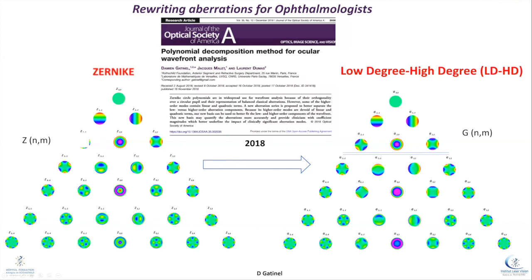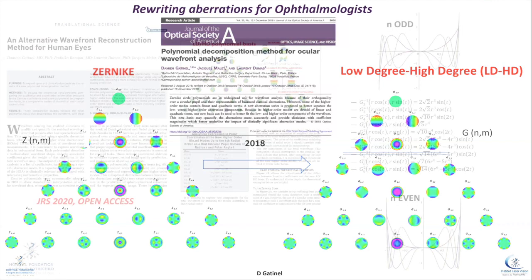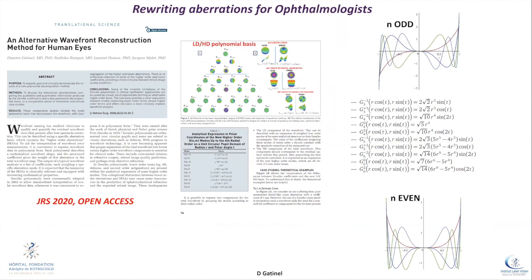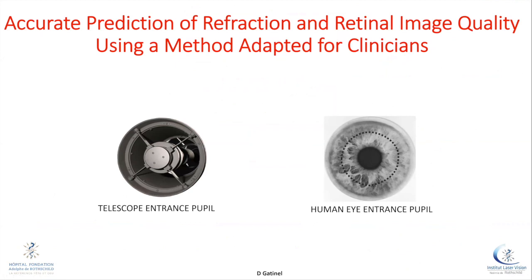We have just published an open access paper in the JRS which drives through a clinically friendly expression the role of these new modes, which are flat in cross section. This is important because what you need as clinicians is something that really matches what you expect for pupils — small or large depending on visual conditions — whereas in a telescope the aperture is obstructed in the center. Zernikes may work well for telescope or microscope apertures, but for human pupils, they do not.